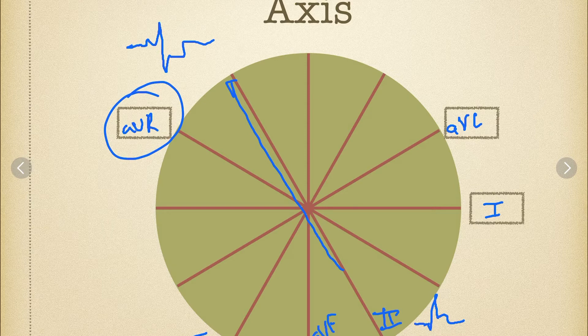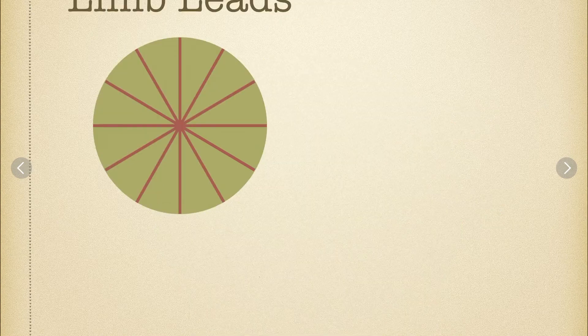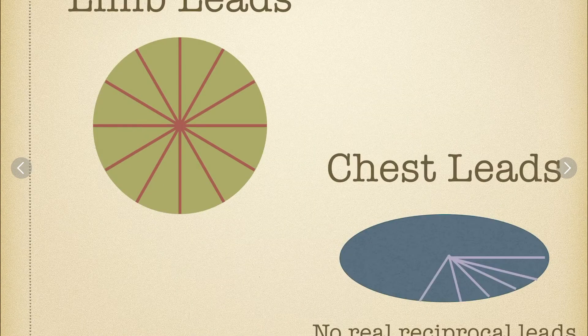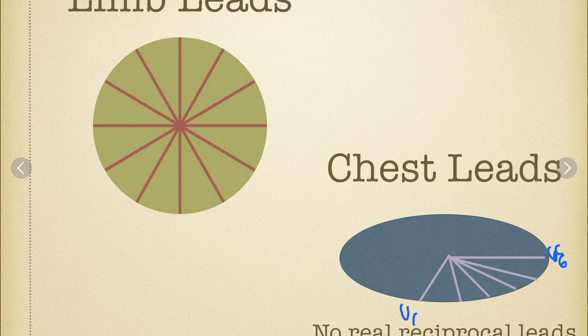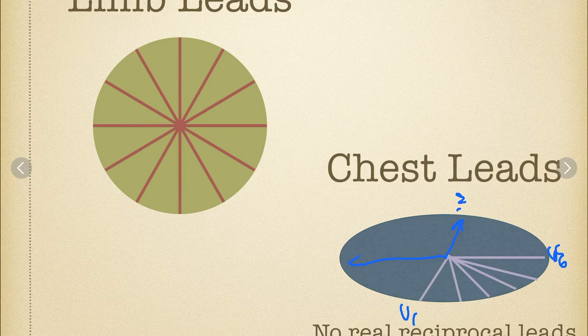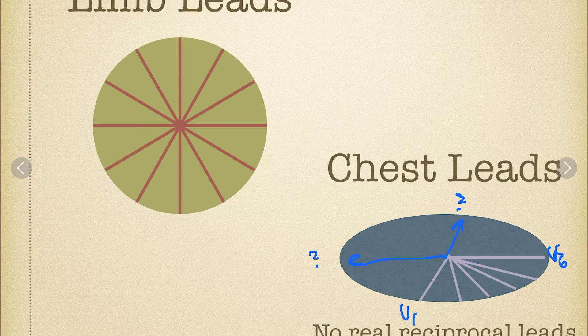This really only works well for the inferior leads, because if we look at our chest leads, you know, we have V one here and V six over here, there's no real reciprocal to that. You know, what is this, this lead over here, unless you do a right-sided MI, right-sided 12 lead.